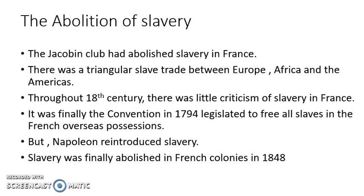The Jacobin Club under Robespierre had abolished slavery in France. But we could see that there were two important port cities which prospered from this slave trade in France — known as Bordeaux and Nantes. These two port cities flourished due to the slave trade.